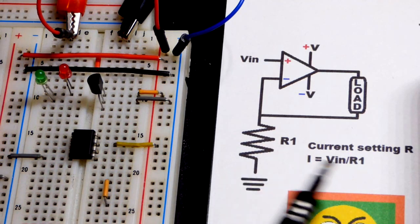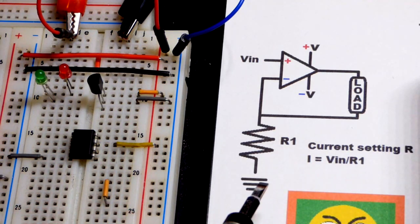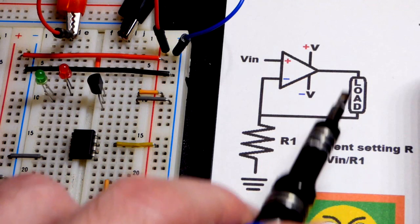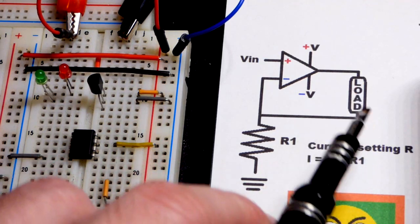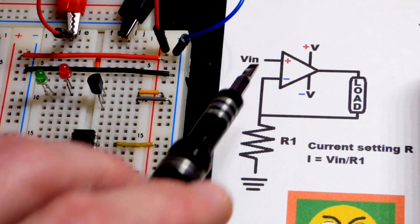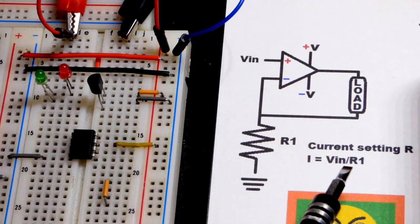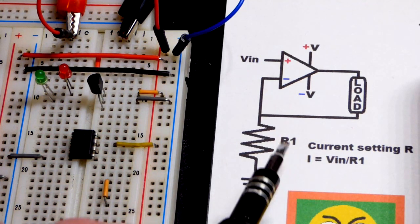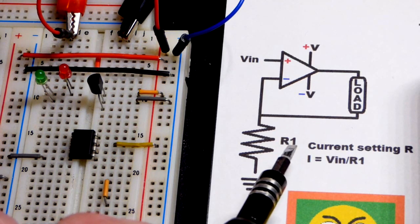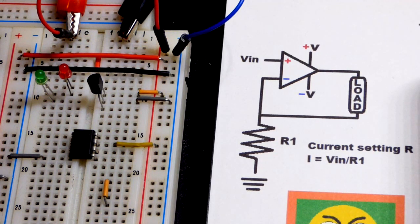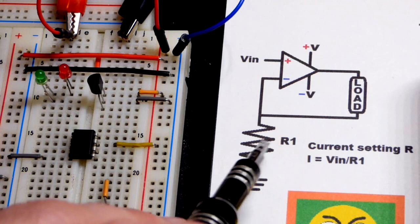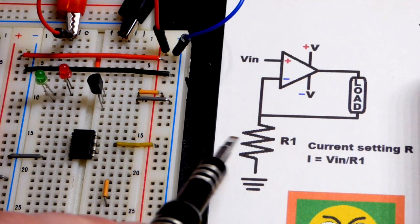The amount of current depends on the resistance of the resistor, so the load can change. As long as you stay within limits, the current is expected to be whatever the voltage in is divided by the resistor. I put R1 there to make it obvious it's a particular resistor and not total resistance.